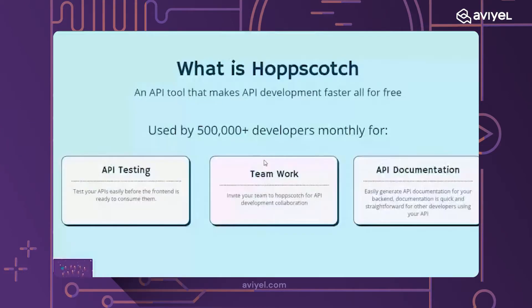Hoppscotch is an API tool that makes API development faster, for free. Hoppscotch is an open source tool which you can use for free, and it is being used by over 500,000 developers monthly — which I am one of them, and you also are going to be one of them.